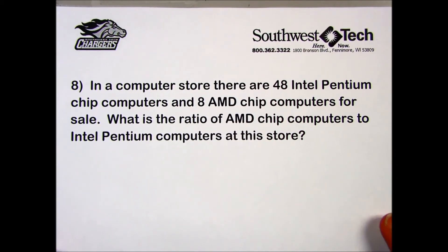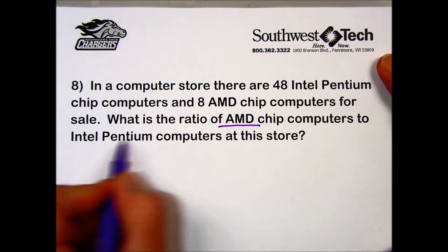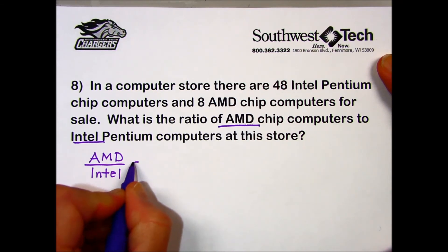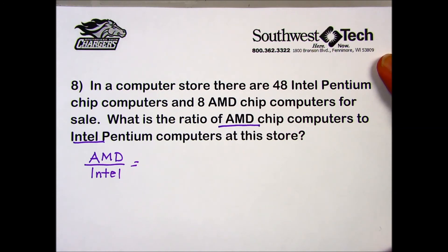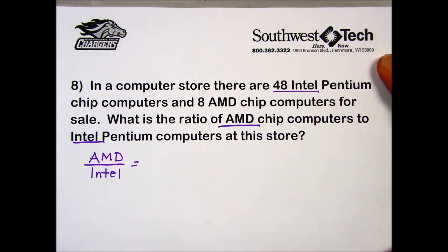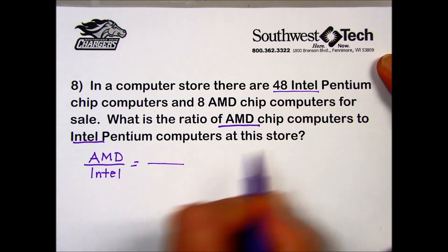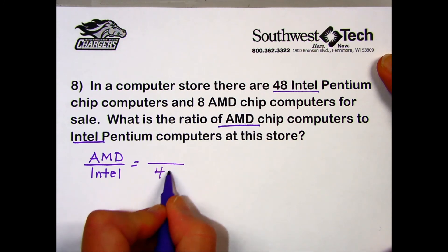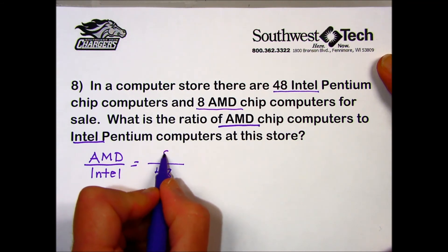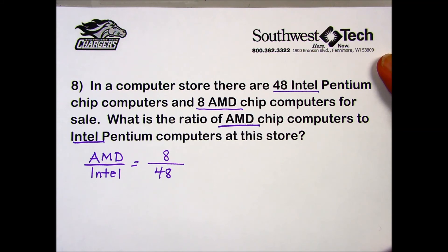Problem number eight states that in a computer store there are 48 Intel Pentium chip computers and eight AMD chip computers for sale. What is the ratio of AMD chip computers to Intel Pentium computers at the store? They're asking us for the ratio of AMD to Intel — we'll make note of that. I'm looking for the total number of AMD. The problem tells us first that there were 48 Intel, but we must pay attention to the order of the ratio: even though Intel is listed first, that value goes in the denominator. The sentence continues and says there are eight AMD chips, which goes in the numerator because we want an AMD to Intel ratio.